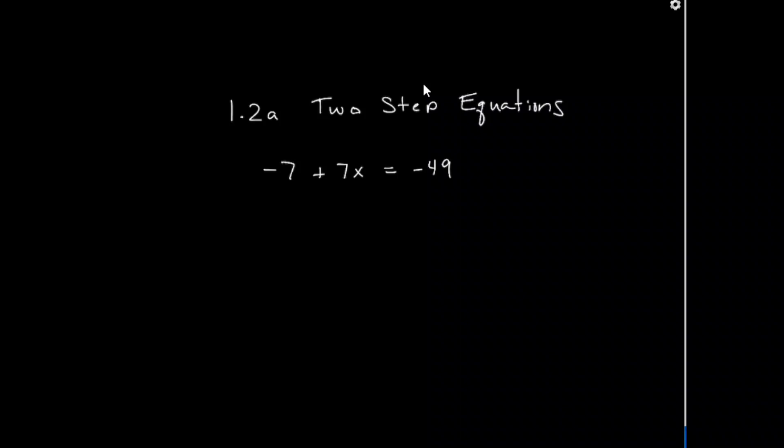So 1.2 covers two-step equations. You can identify a two-step equation because the coefficient in front of the x is something other than 1, or the number in front of x.